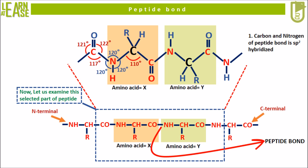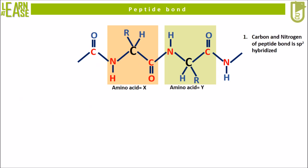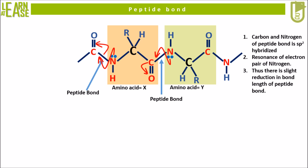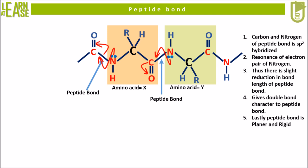This is because the carbon and nitrogen of the peptide bond are sp2 hybridized. The nitrogen involved in peptide bond formation possesses a lone pair of electrons which can easily resonate across the peptide bond. This resonance of the lone pair of electrons causes a partial reduction in the bond length of the peptide bond, and this phenomenon of resonance gives partial double bond character to the peptide bond. As a result, the peptide bond is planar and rigid.